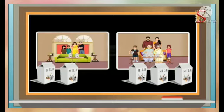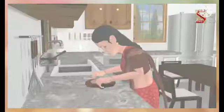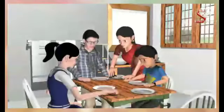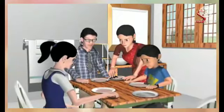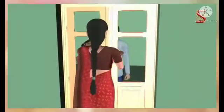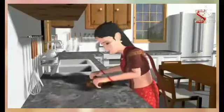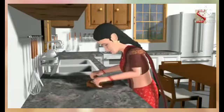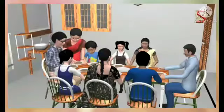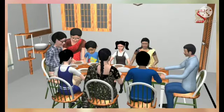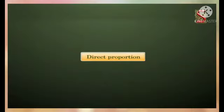In our day-to-day life, we come across many situations where variation in one quantity results in variation in another quantity. Now look at this situation: a lady prepares 20 chapatis for her family of four people so that she can serve five chapatis to each member. Next day, some relatives visit — there are four relatives in total. Can we say how many chapatis she would have to make for eight people so that she can serve five each? To learn about this, let us study the concept of direct proportion.